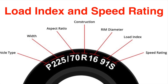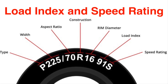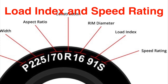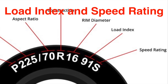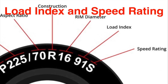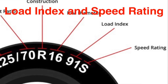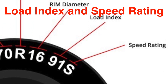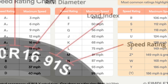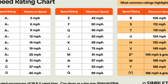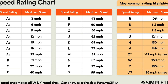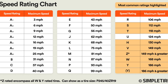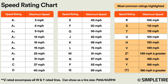Tires also have load index and speed rating markers, which can be found after the main size description. The load index indicates the maximum weight the tire can support, while the speed rating tells you the maximum speed at which the tire can carry a load safely.